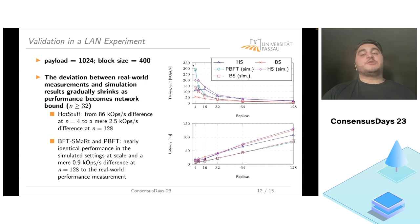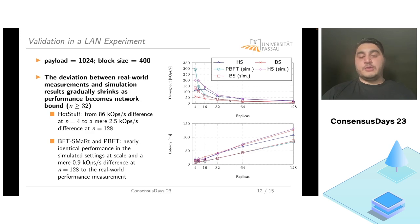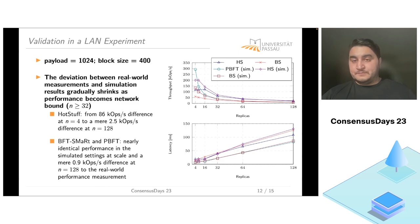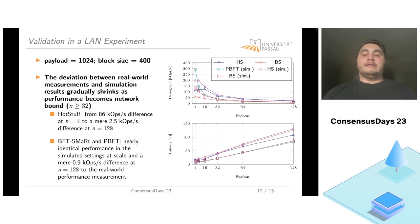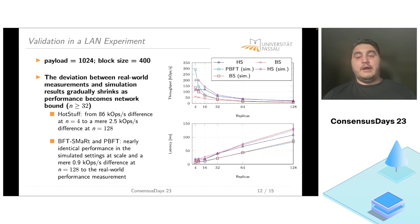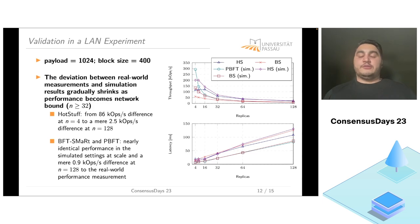The performance difference shrinks as system scale grows, dropping to a mere 0.9k ops/second difference. The reason is that Phantom is not able to model computational costs. At small scales these computational costs play a large role in dictating performance. However, as system scale grows, performance becomes dictated by the underlying network, and this is where Phantom becomes very accurate.